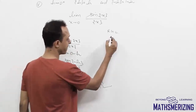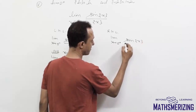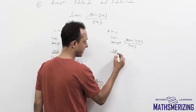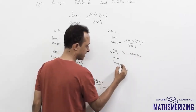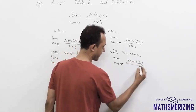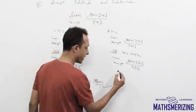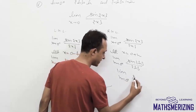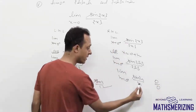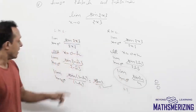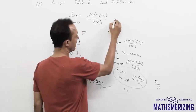For the right-hand limit, let x = 0 plus h, so {h} = h. The expression becomes limit h→0+ of sin(h)/h, which is the standard limit equal to 1. Since the left-hand limit (sin 1) is not equal to the right-hand limit (1), the limit does not exist.